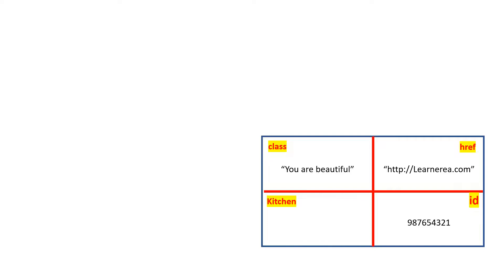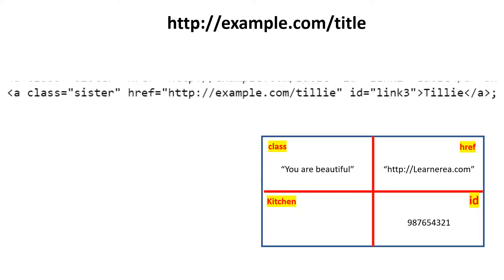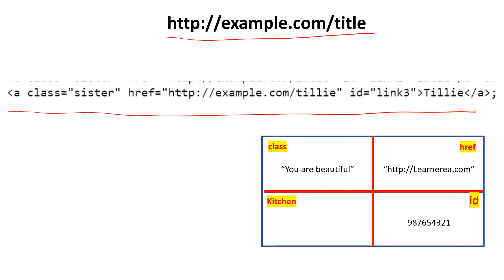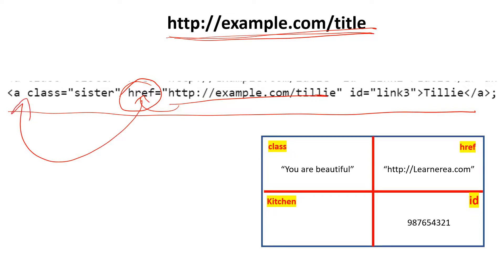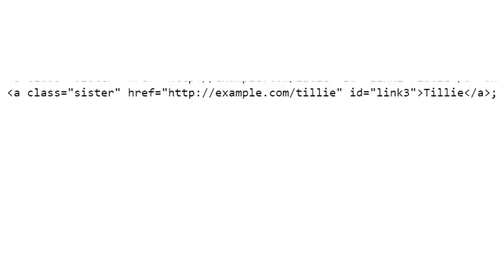This is how you figure out, when given content, which attribute it belongs to when writing HTML. But since we're doing web scraping, we need this understanding to figure out which attribute to use when fetching a string. For example, if this is the string you want to fetch from the HTML, the attribute you'll use is href. So you can say: this text resides under the href attribute, and that attribute is under the 'a' tag.